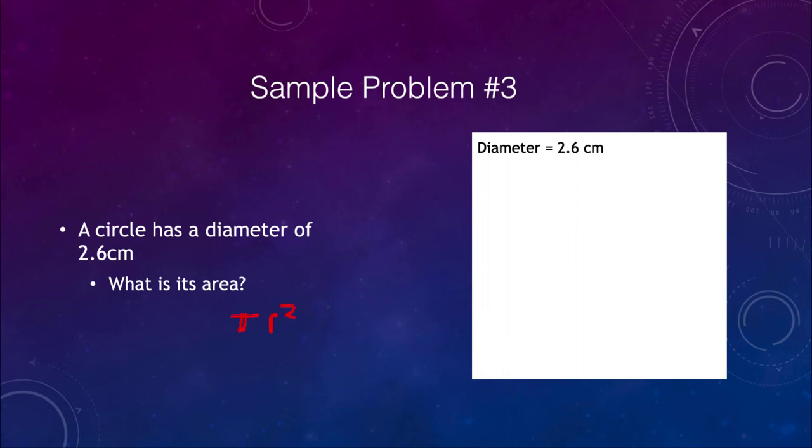So our first thing we need to do is convert the diameter into a radius. Diameter is the whole distance across the circle, the radius is just half of that. The radius equals one half of the diameter. Therefore, the radius will be 2.6 centimeters divided by two, or 1.3 centimeters.